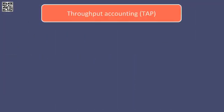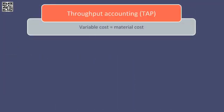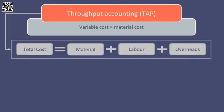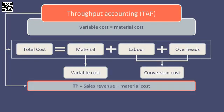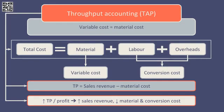Throughput accounting assumes that the only totally variable cost is materials, and that there is some element of fixed costs within labour and overheads, and as such only material costs are considered within the throughput calculation. The throughput figure is therefore simply sales revenue minus material costs, so clearly in order to maximise throughput and therefore profit, we want to maximise revenues and minimise conversion and material costs.